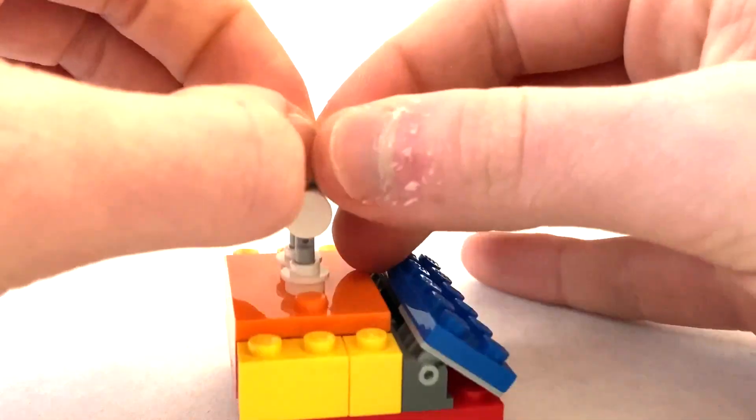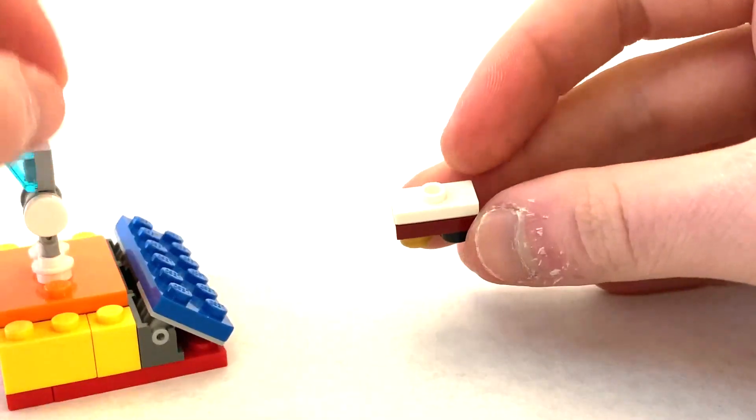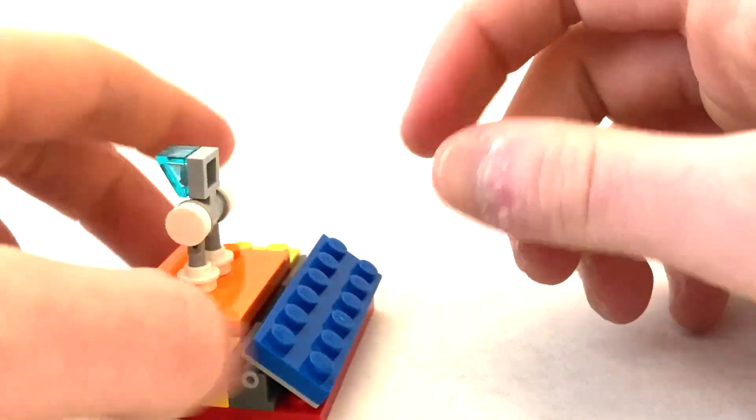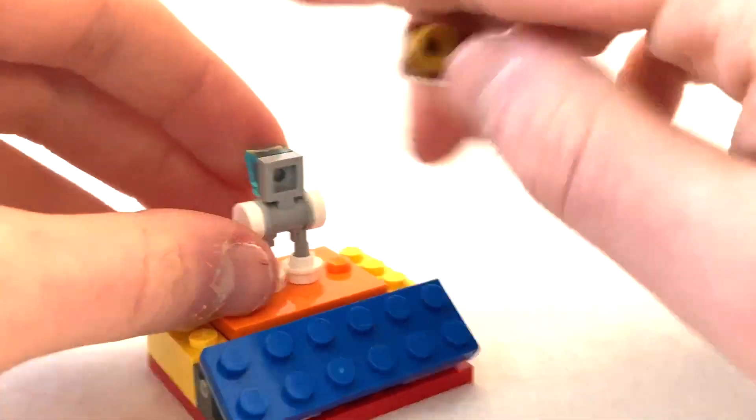Just to show you really quick, here is the jumper that you need, it's white, and then this piece right here, and then you know what this piece is.